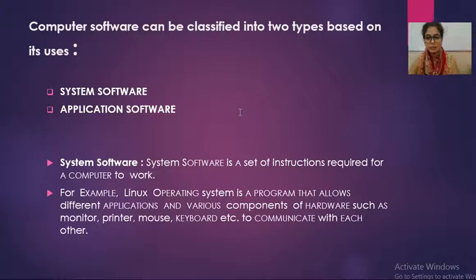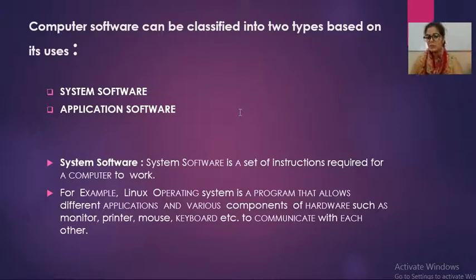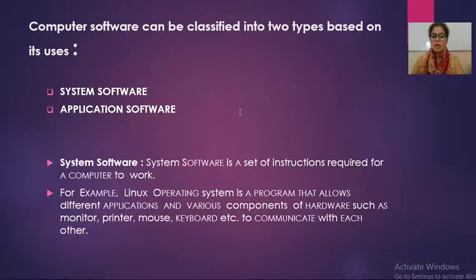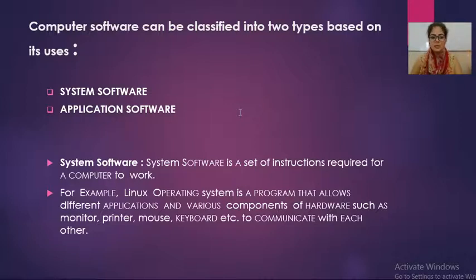For example, as I am recording this video, it is mandatory that I must have some device by using which I can record or operate this. The software required to operate that machine is system software. Another real life example is your PC. When you have to operate a PC, it is mandatory that you must have some operating system like Windows 8, Windows 10, or Windows 7. Whatever operating system we are using, that operating system allows us to use that machine. All these types of software which are required to operate the system are known as system software.